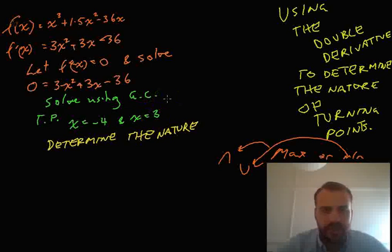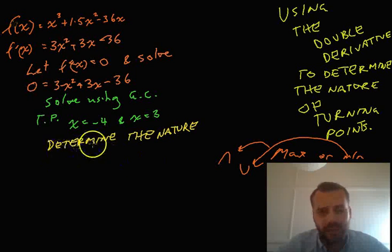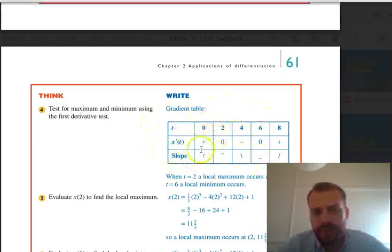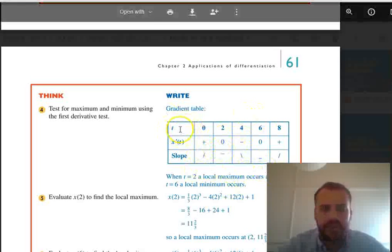Now, I'll just pull up our textbook so you can see what we've done. Because we've determined the nature of turning points before, but we've done it in a really ugly way. You should remember doing these horrible gradient tables to determine the nature of the turning points. As you can see, this one tells us that it was a maximum here and a minimum here. We're going to do away with that and we're going to do something much, much easier.